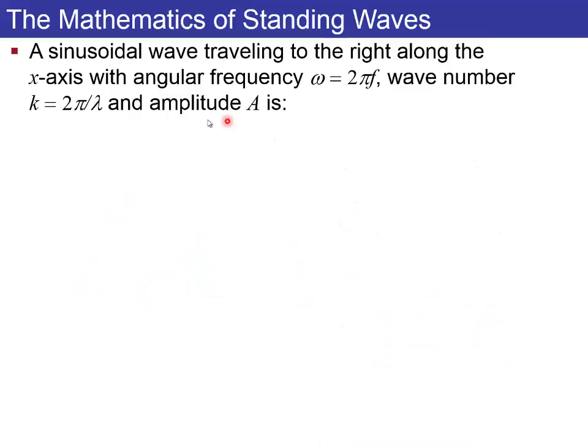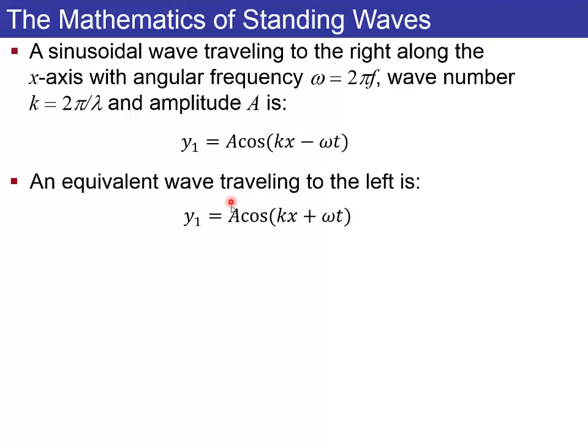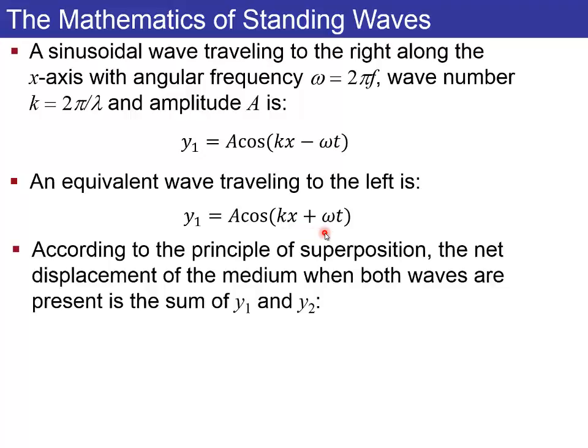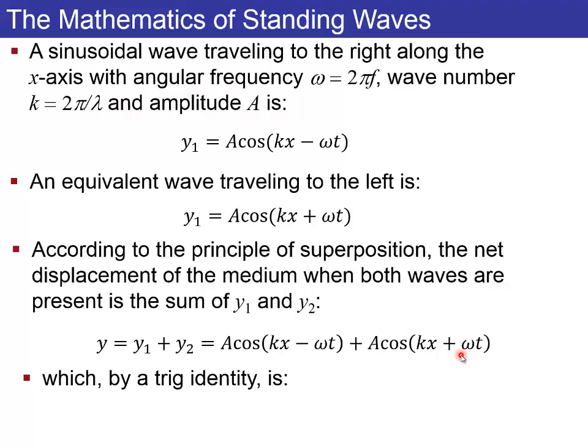So the math of it works out like this. You have a sine wave going from left to right, A times cosine KX minus omega T, added to a cosine sinusoidal wave traveling from right to left, KX plus omega T. When you add those up, it's just Y1 plus Y2, so you just add these two, A cos KX minus omega T, plus A cos KX plus omega T. At this point, we can use a trigonometric identity, which is mentioned in Wolfson, and you can solve that this equals 2A times sine KX multiplied by sine omega T.